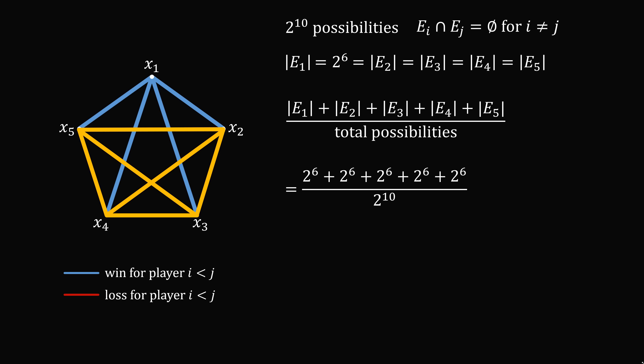This will be 2 to the 6, plus 2 to the 6, plus 2 to the 6, plus 2 to the 6, plus 2 to the 6, all over 2 to the power of 10. So this is 5 times 2 to the power of 6, divided by 2 to the power of 10, which equals 5 divided by 2 to the power of 4, and that gives us the answer of 5 over 16.